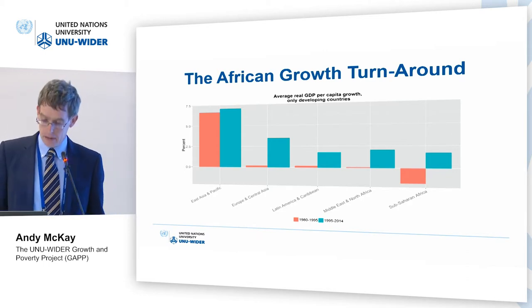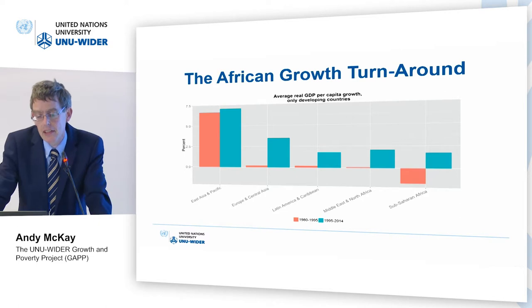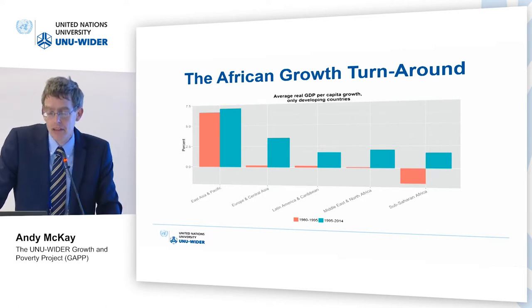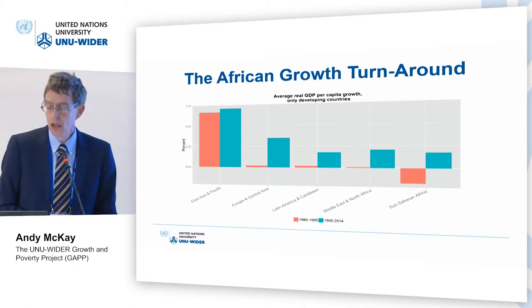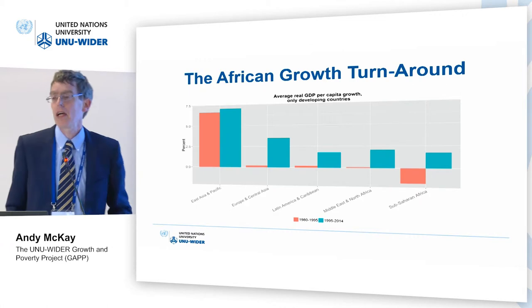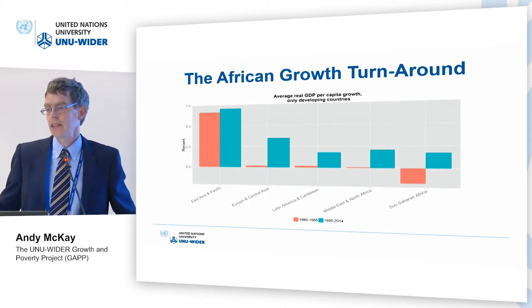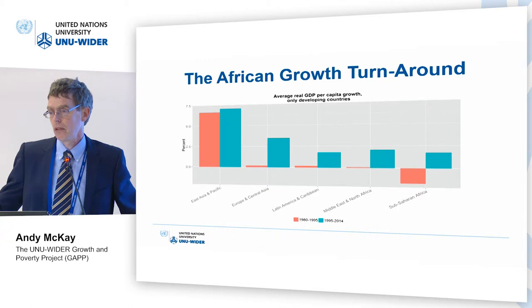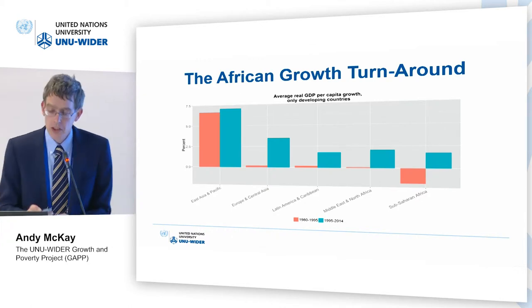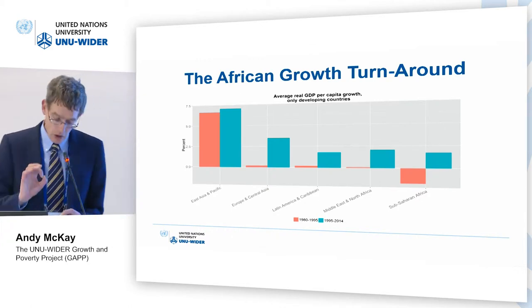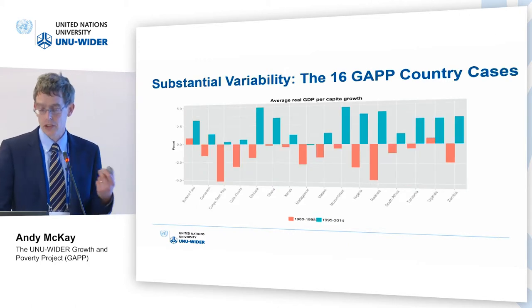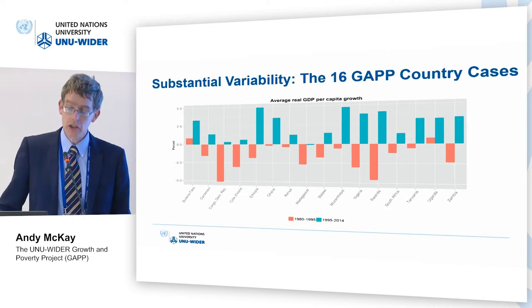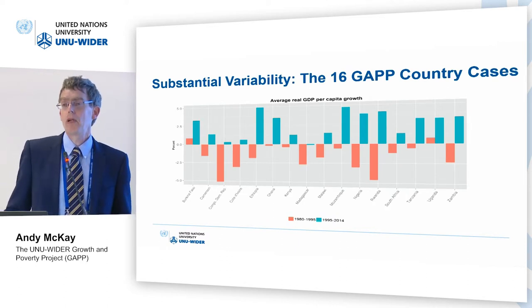Now, if we look at the chart, the red bars compare growth from 1980 to 1995, and the blue bars from 1995 to 2014, for different regions of the world. The one on the right is sub-Saharan Africa — we have negative growth in the 80s into the 90s turning into positive growth. The same pattern appears elsewhere — positive growth everywhere — but African per capita growth is actually lower than most other regions. Looking at the 16 countries, the red bar is the early period and the blue bar is the later period.